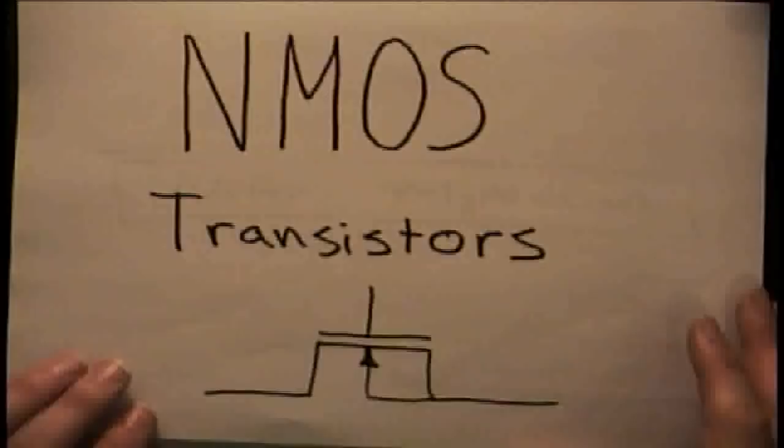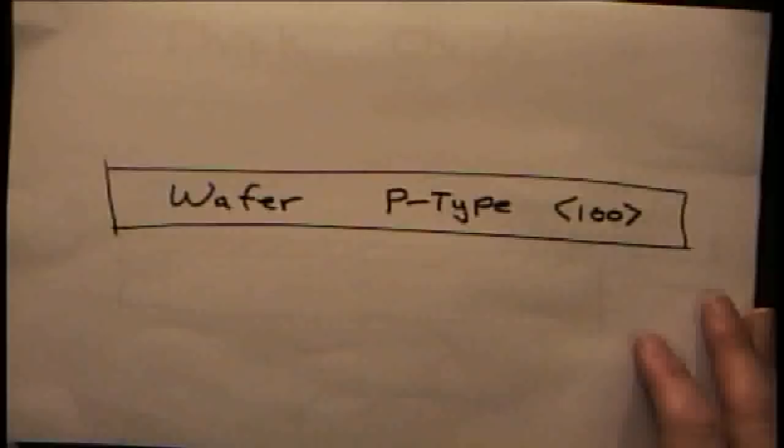Today I'll be showing how to make an NMOS transistor. This is the type of transistor that turns on when you apply a gate voltage. We start with a p-type wafer with the 100 crystal orientation.